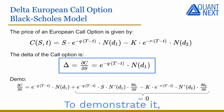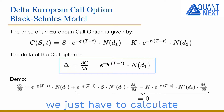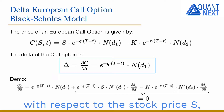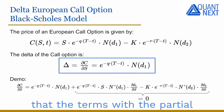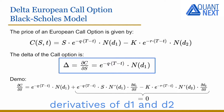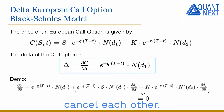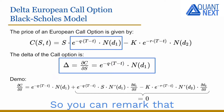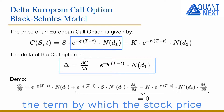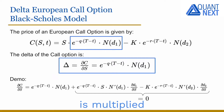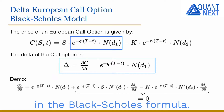To demonstrate it, we just have to calculate the delta as a derivative of the Black-Scholes price with respect to the stock price S, and it can be shown that the terms with the partial derivatives of D1 and D2 cancel each other. I let you demonstrate it as an exercise. You can remark that the delta is equal to the term by which the stock price is multiplied in the Black-Scholes formula.